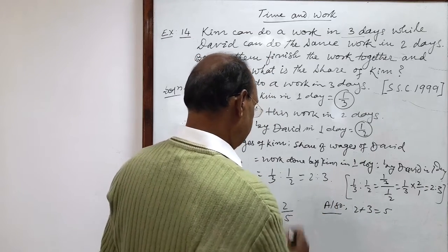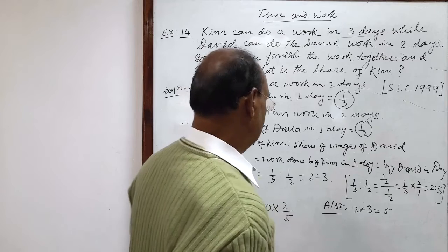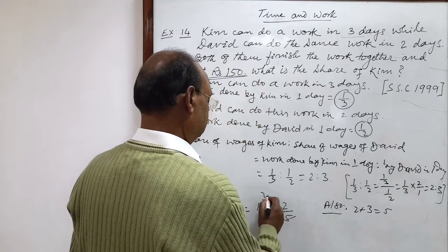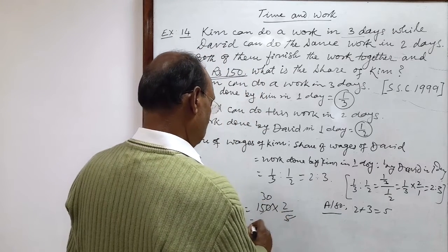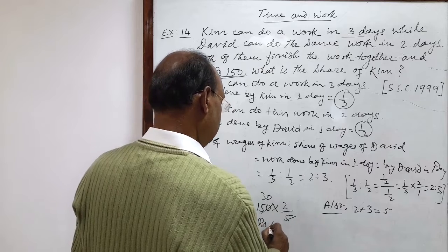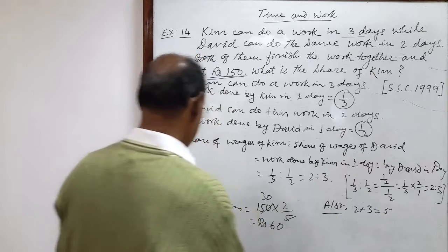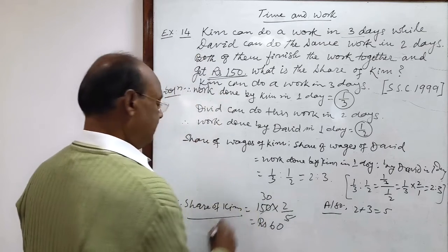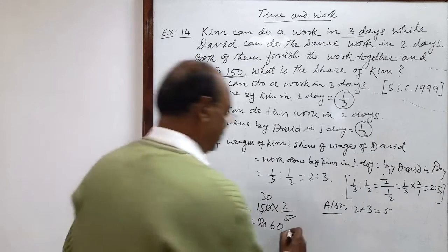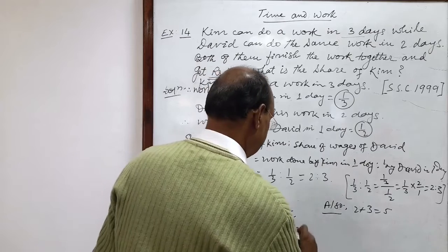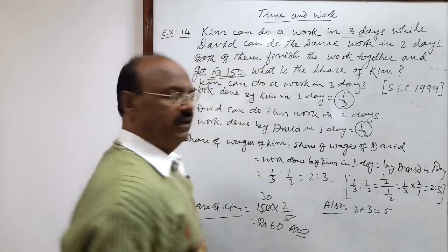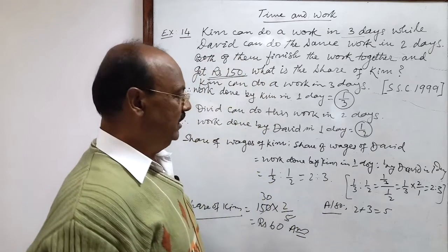Let us calculate it. This is equal to rupees 60. So this is the share of Kim — rupees 60. This is the answer. The question is very simple and very interesting.